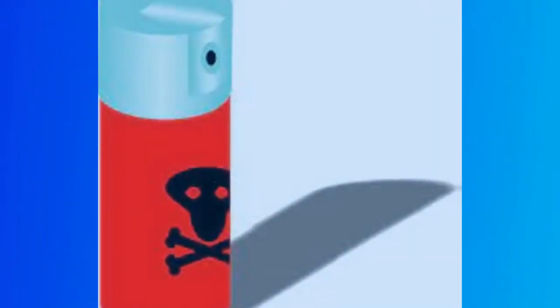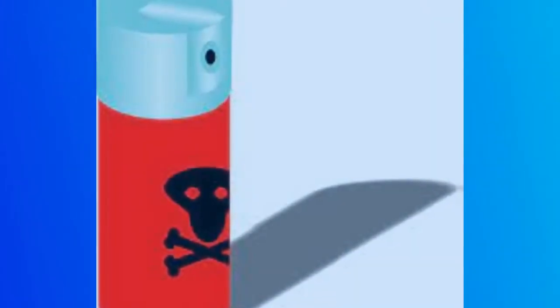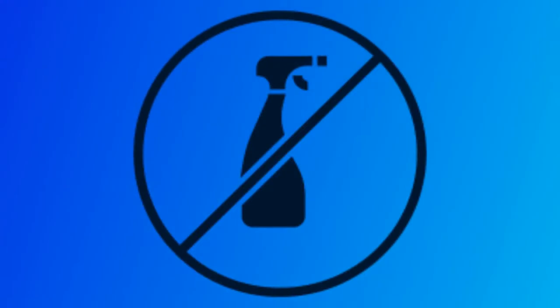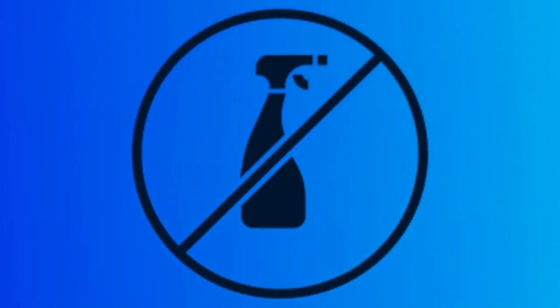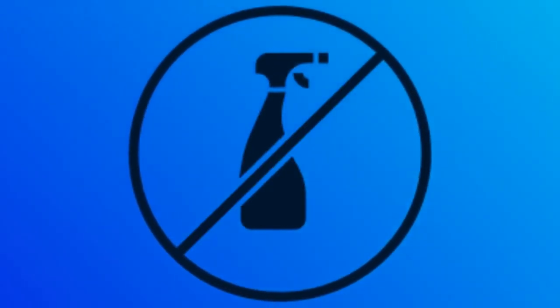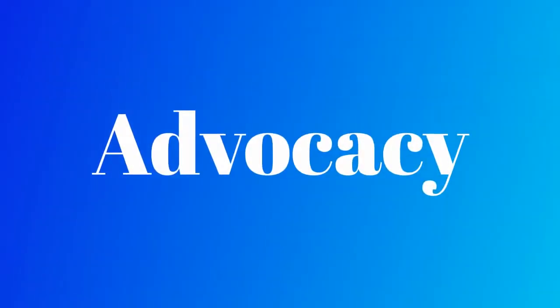Pesticide is a spray that kills bees, but first it makes them disoriented. Bees provide us with food, so please be bee friendly.